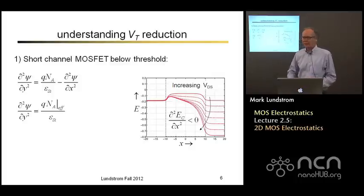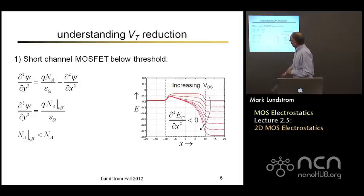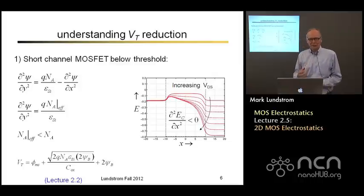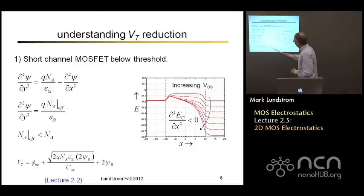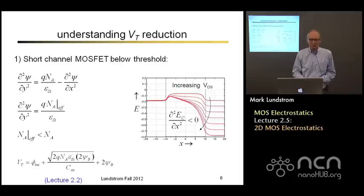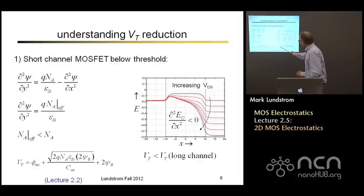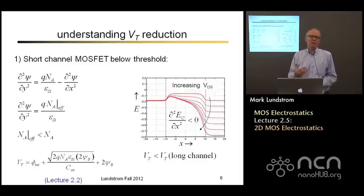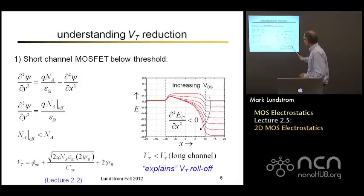What would the consequences of that be on the MOSFET? Well, in an earlier lecture — lecture 2.2 — we developed an expression for the gate threshold voltage: the voltage needed to create an inversion layer and bend the bands by 2 psi_B. Psi_B depends on the doping density, and the volt drop across the oxide depends on the doping density. So if the doping density is effectively lighter due to this two-dimensional electrostatics, the threshold voltage will be smaller. This gives us an understanding about why, if you measure the threshold voltage in a short-channel MOSFET, it will generally be smaller than in a long-channel MOSFET. So it explains that roll-off or reduction in V_T as the channel length decreases.